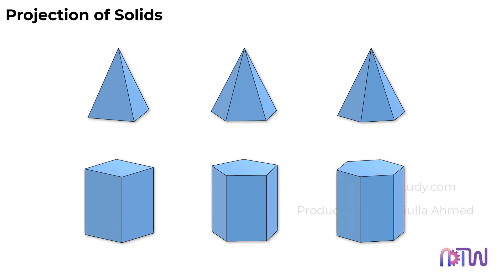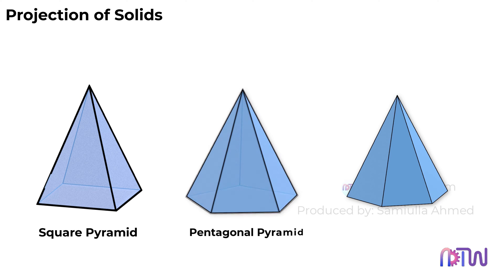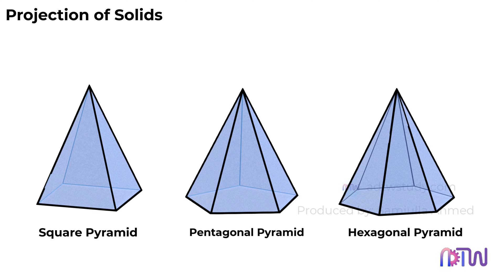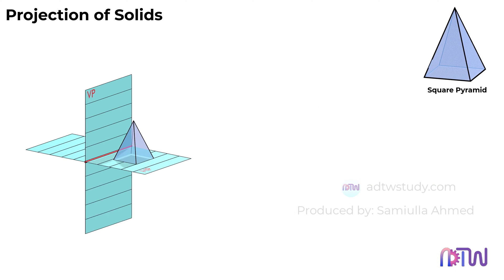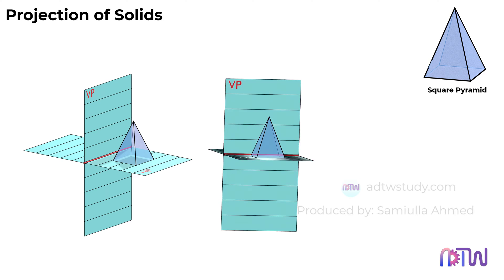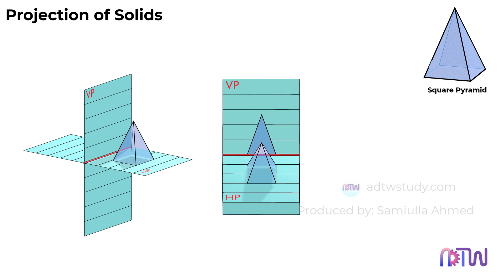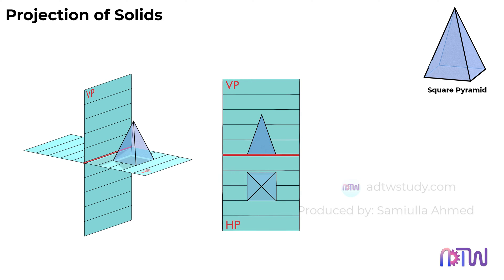We will start with pyramids. These are examples of different types of pyramids: square pyramid, pentagonal pyramid, hexagonal pyramid. Consider a square pyramid in the first quadrant. When we see the front view of the square pyramid it will look like this, and when we see it from the top view it will look like this. This view shows the true shapes of the square pyramid, which we will need to draw first in every problem for the given solid.